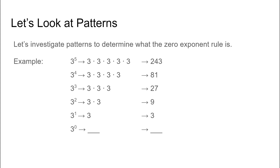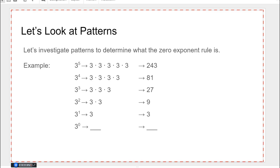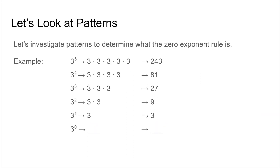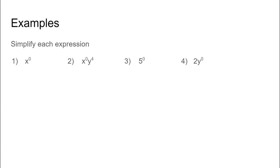Let's see if it works for a different base of three. Three to the fifth power is 243. How do we get from 243 to 81? We divide by three. 81 divided by three is 27, divide by three again gives nine, nine divided by three gives three, and three divided by three is one. Three to the zero power is one. So we can say that anything to the zero power is one. The common mistake is to say anything to the zero power is zero, but we just proved that is not the case.